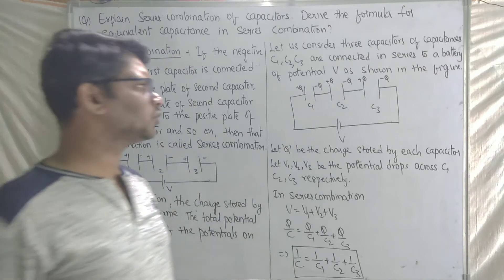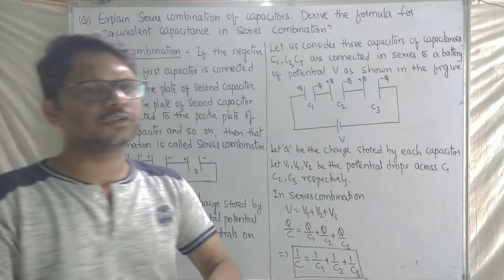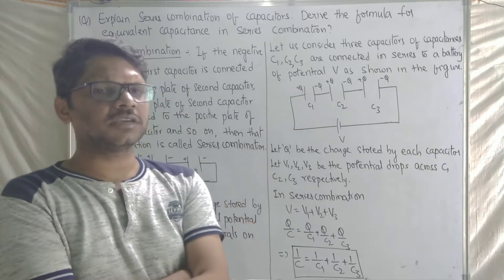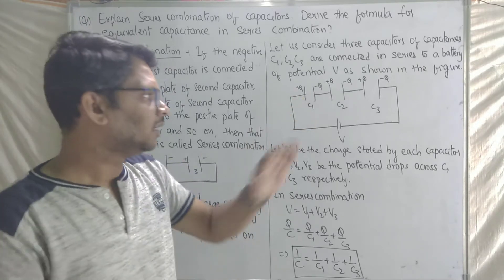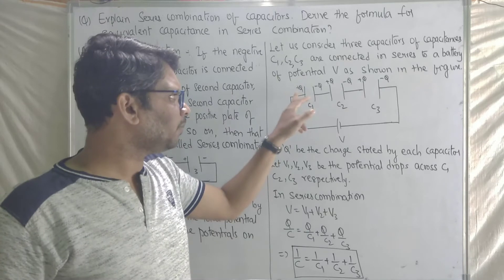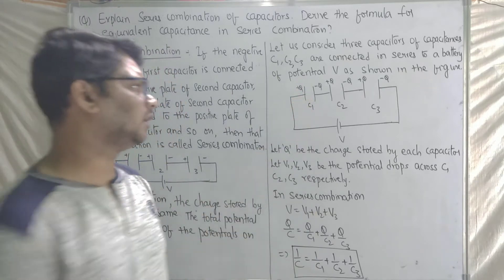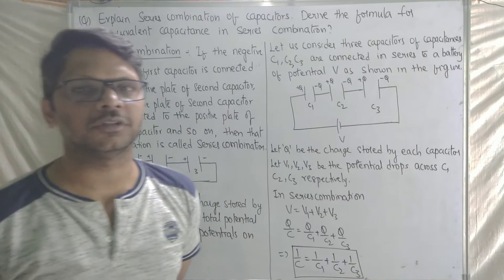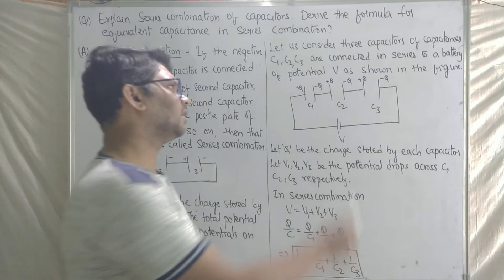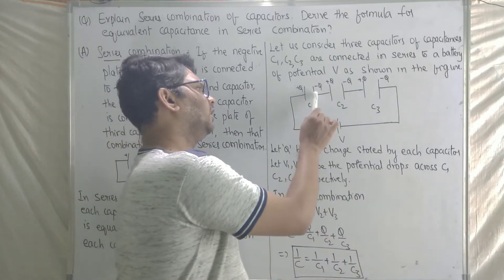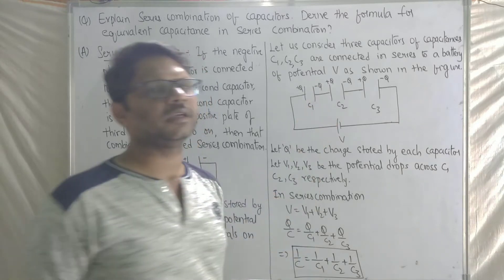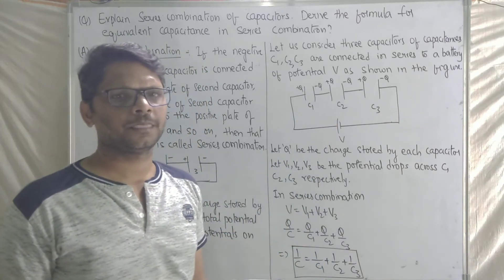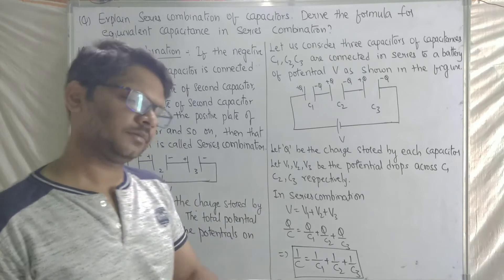What charge is stored — for example, a plus Q charge is stored on one plate. The plus Q charge stored on that plate automatically induces a minus Q charge on the opposite plate.